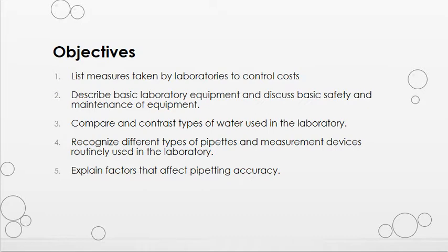The objectives for this lecture: number one, list measures taken by laboratories to control costs. Number two, describe basic laboratory equipment and discuss basic safety and maintenance of equipment. Number three, compare and contrast types of water used in the laboratory. Number four, recognize different types of pipettes and measurement devices routinely used in the laboratory. Number five, explain factors that affect pipetting accuracy.